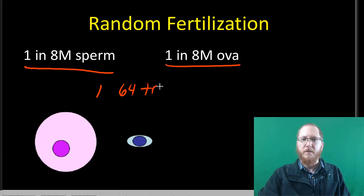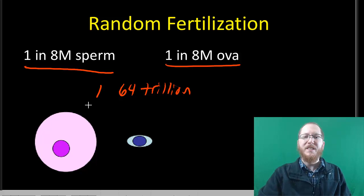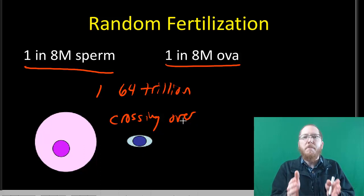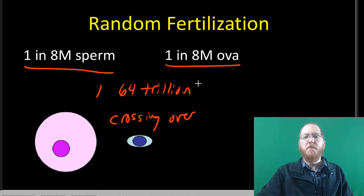The odds of that are about 1 in 64 trillion. This is exceedingly, exceedingly rare that that would ever happen. And once again, this is not including the idea of crossing over. We're ignoring that because technically it's not like you just get moms or just get dads. Technically, each of those can be a unique mixture itself that's a varying amount of moms and dads.